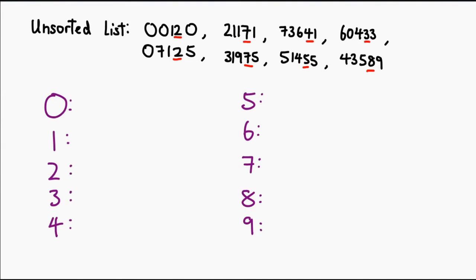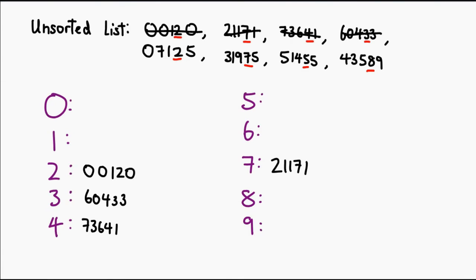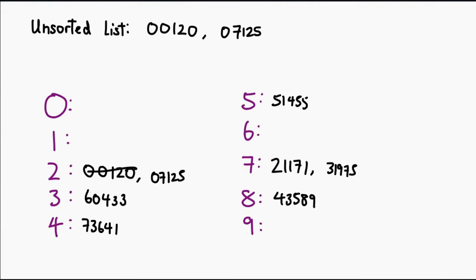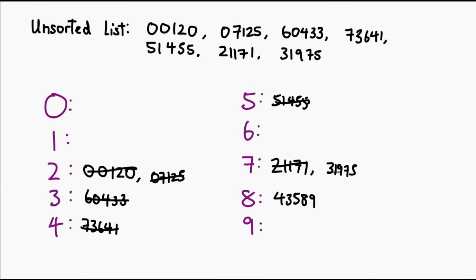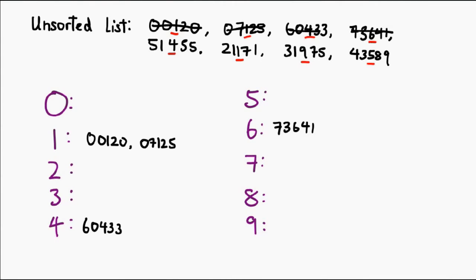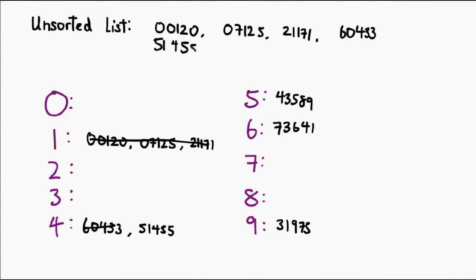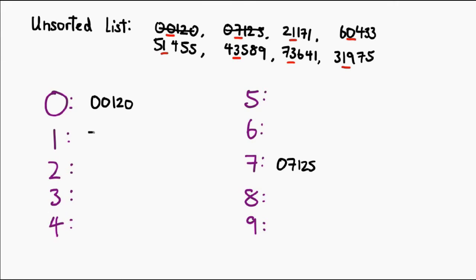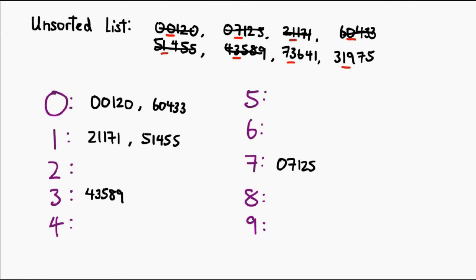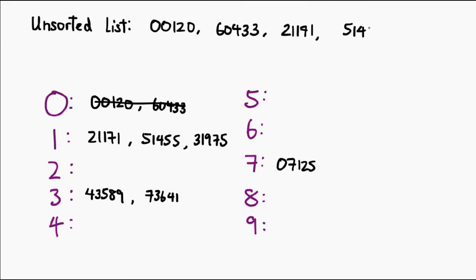I'm erasing all the underlines, and now we're going to move on to look at the second digit from the right. We create our buckets and group everything once again based on the underlined digit — but now the underlined digit is the second digit. Rinse and repeat. Once everything is in their buckets, we pull everything out again and stick them back into the list, then move over to the next radix. We do the exact same thing for subsequent digits, splitting everything into buckets based on each radix and reassembling the list.